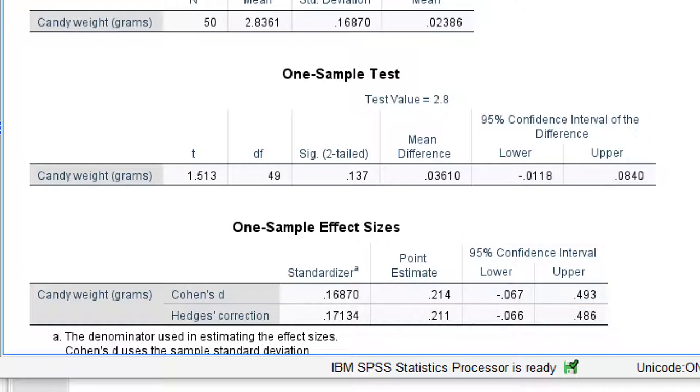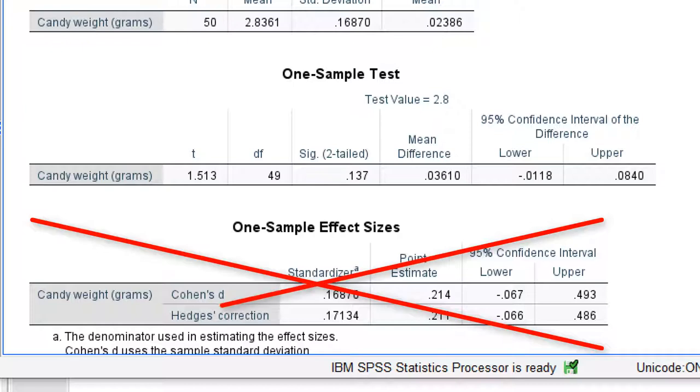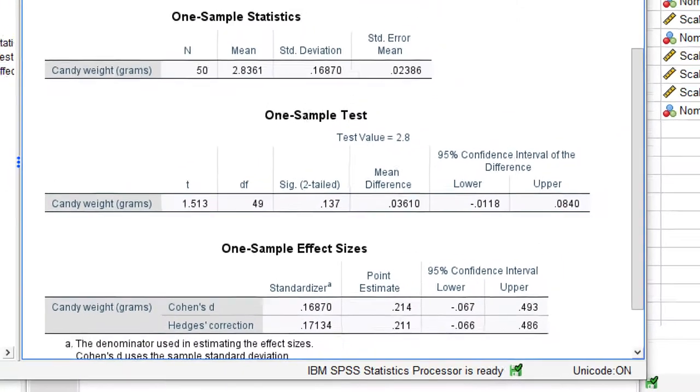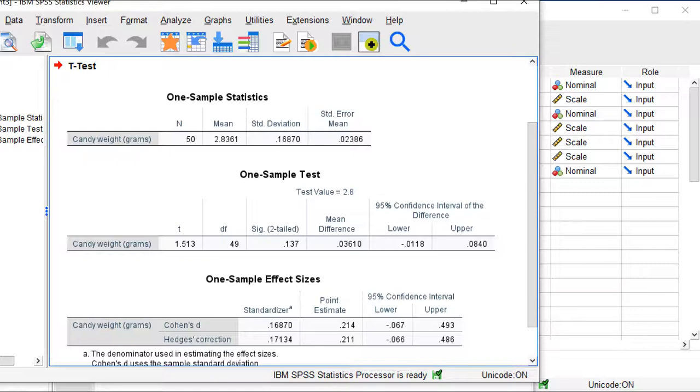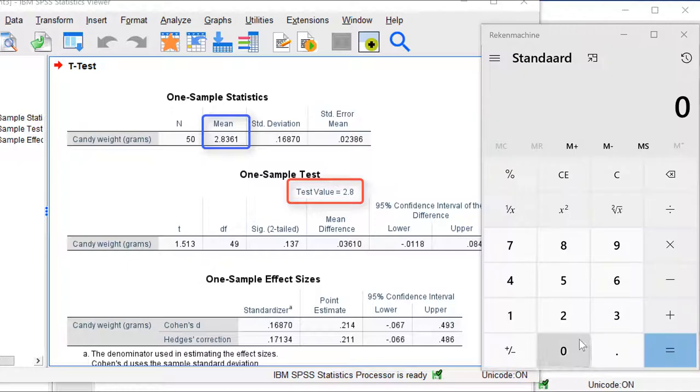Unfortunately, SPSS versions 26 and older do not have the option to report effect sizes such as Cohen's d. It is, however, relatively easy to calculate Cohen's d by hand from SPSS output. Let us have a look at some t-tests. First of all, a one-sample t-test. We test the null hypothesis that average population candy weight is 2.8 grams. In our sample, we find an average of 2.836 grams.